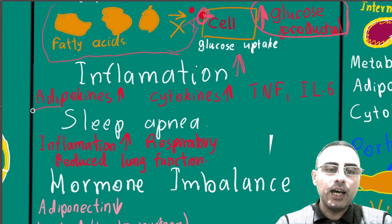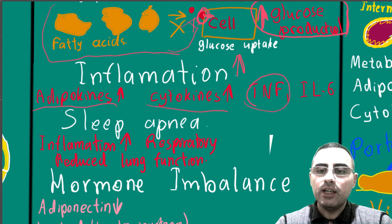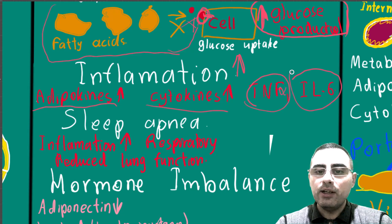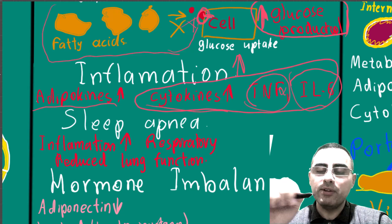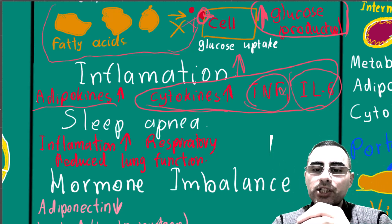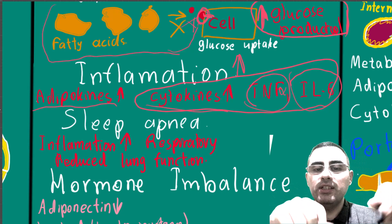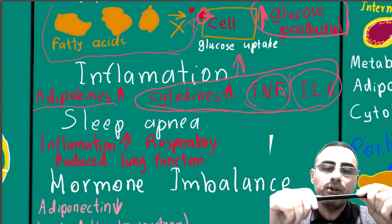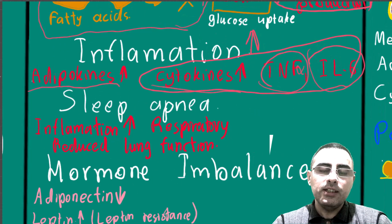Another important factor is increased inflammation. Visceral fat increases inflammatory mediators including adipokines, cytokines, tumor necrosis factor alpha, and interleukins. These increase inflammation in the body, meaning chronic inflammation and an increased risk of chronic diseases.